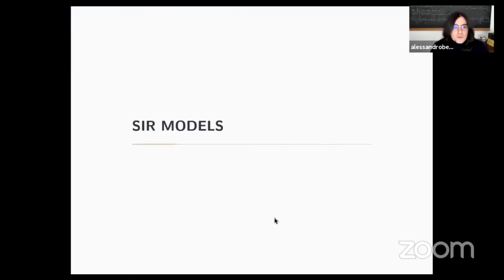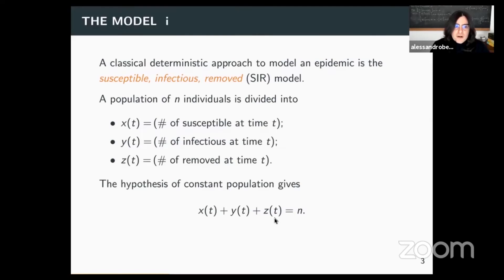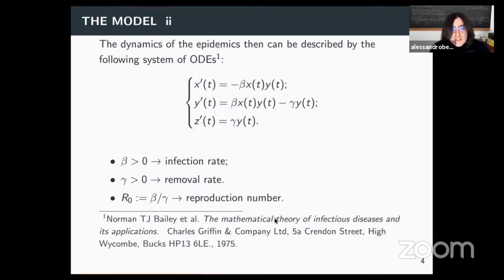First of all, I would like to revise the basic SIR model just to fix the notation. In the classical SIR model, we assume that the population, that we have a constant population divided into three groups that are the susceptible, the infectious, and the removed. I will call x of t, the number of susceptible at time t, y of t, the number of infections at time t, and z of t, the number of removed at time t. And of course, since we have a constant population, the sum of all these three variables should be constant for any time.